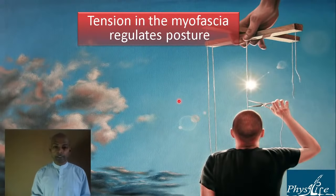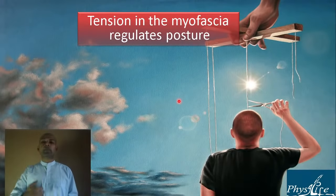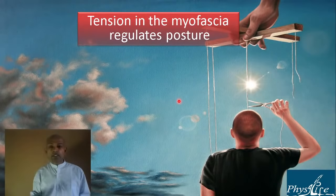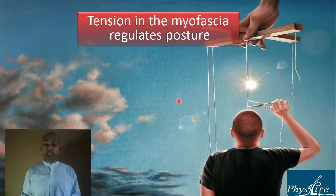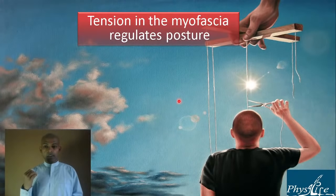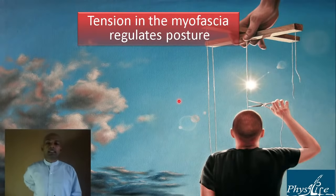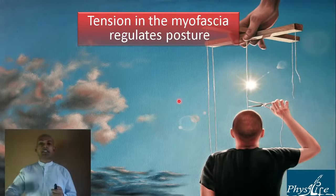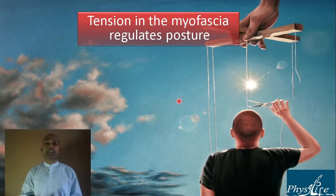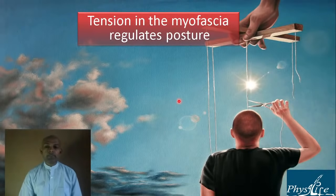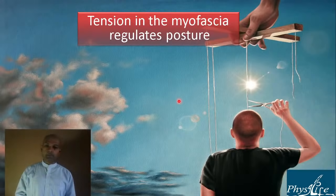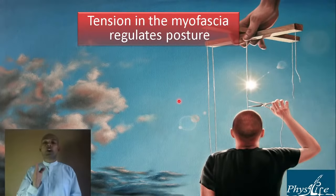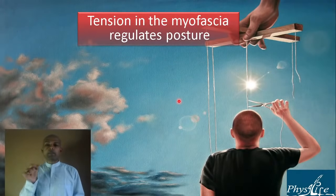Tension in the myofascia regulates posture — we are like puppets and the strings are our fascial lines. With appropriate tension in the proper fascial lines, you maintain correct posture. If tension in the back extensors is reduced, you will slouch. If tension on one side of the neck is reduced, the neck will tilt to the other side. An imbalance makes posture abnormal; normal posture means optimum tension in all directions.